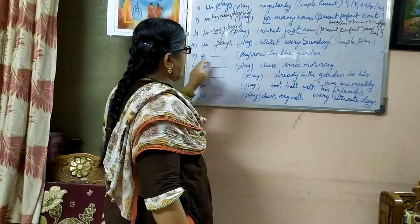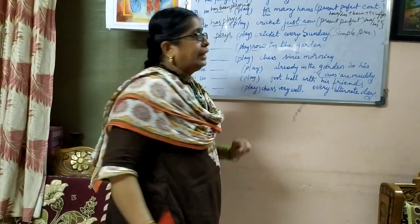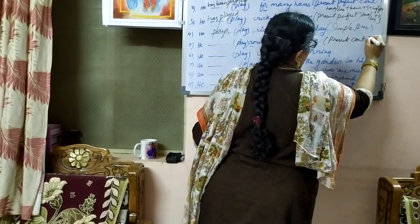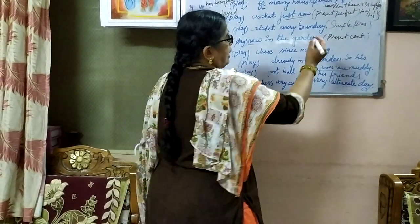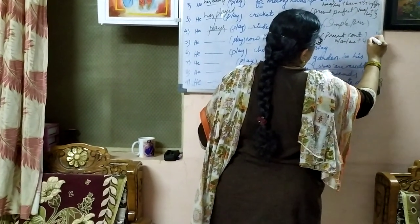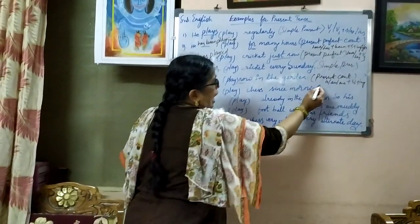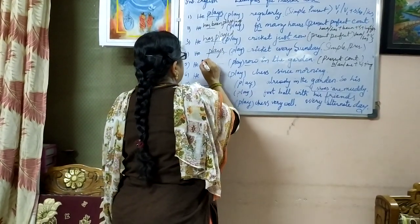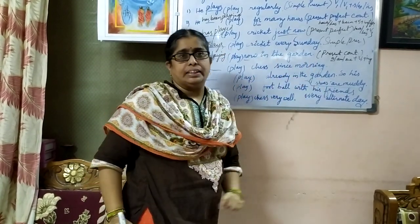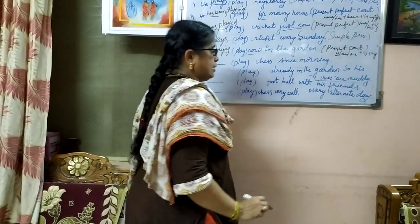Moving on to the fifth one: he dash play now in the garden. The word 'now' shows that the action is going on — that means it is a present continuous action. That's why we take: is or am or are plus V1 plus ing form. As the subject is third person singular 'he', we take 'is'. The answer is: he is playing now in the garden.